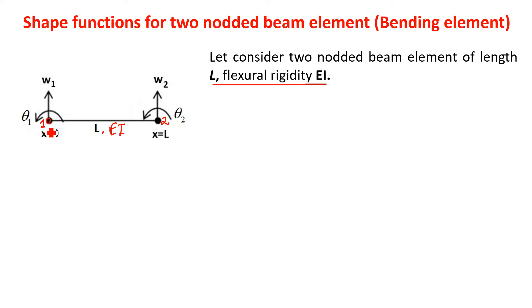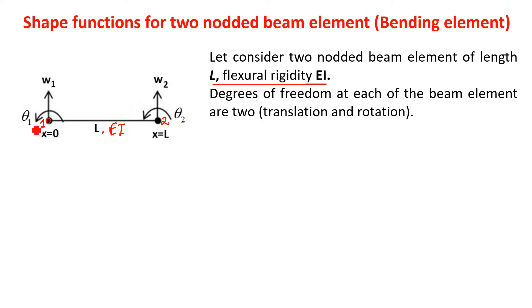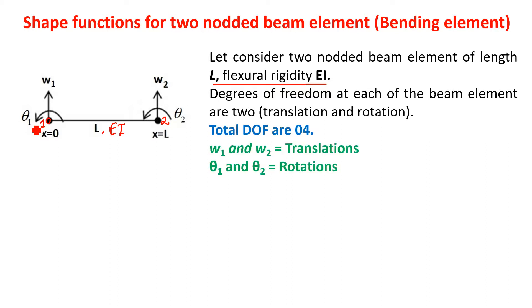We know that the beam has two degrees of freedom per node. One is vertical translation, which is vertical displacement, represented by W, and the second is rotation, represented by theta. So W1 and theta 1 are the degrees of freedom at node number 1, and W2, theta 2 are the degrees of freedom at node number 2. Total degrees of freedom in one beam element are 4: two translations and two rotations.